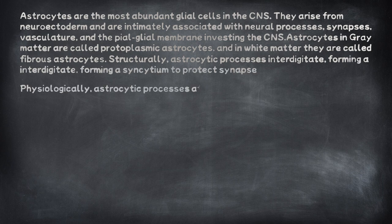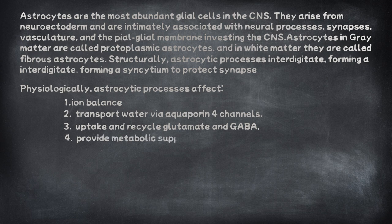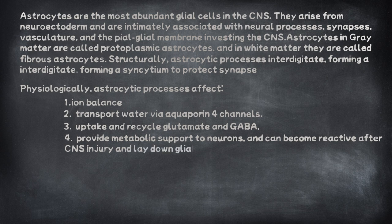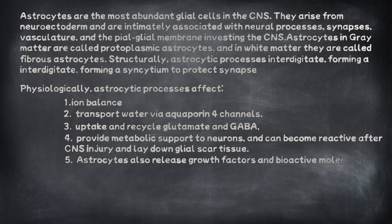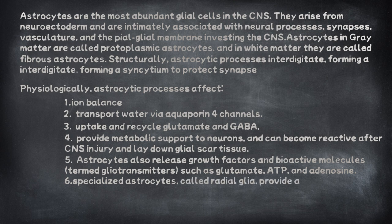Physiologically, astrocytic processes affect: 1. Ion balance, 2. Transport of water via aquaporin-4 channels, 3. Uptake and recycling of glutamate and GABA, 4. Metabolic support to neurons — they can also become reactive after CNS injury and lay down glial scar tissue. 5. Astrocytes also release growth factors and bioactive molecules termed gliotransmitters, such as glutamate, ATP, and adenosine. 6. Specialised astrocytes called radial glia provide a scaffold for orderly neural migrations in the CNS.